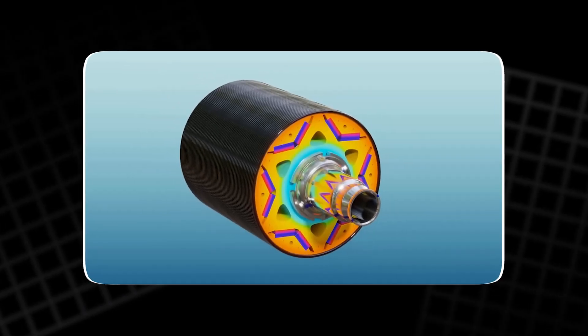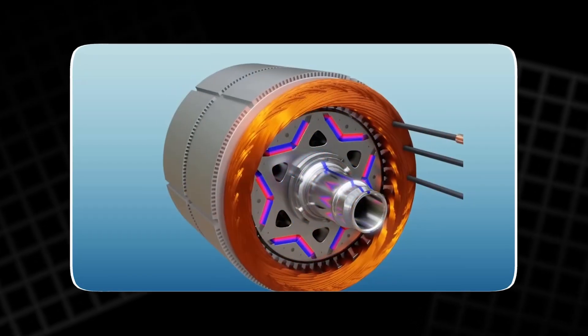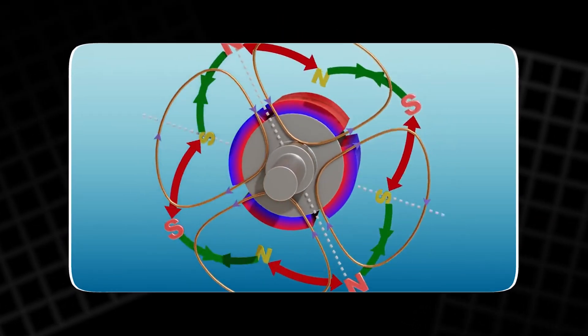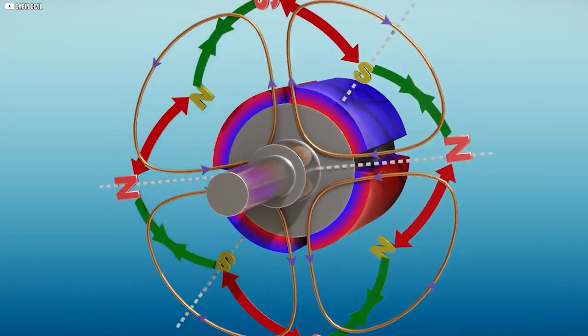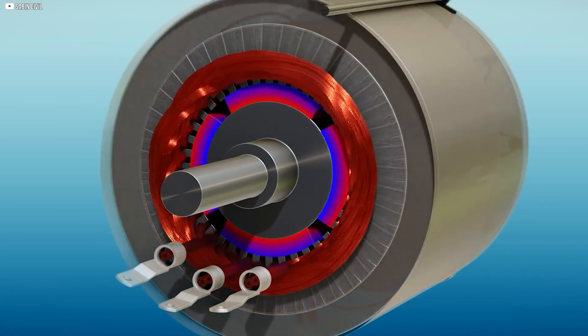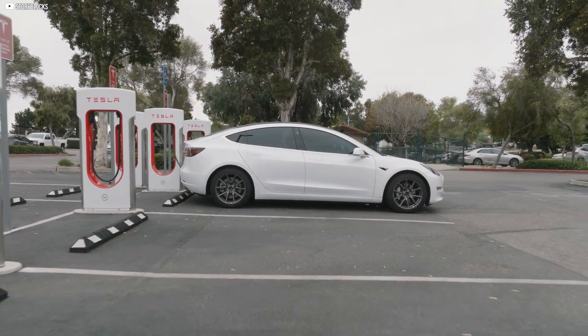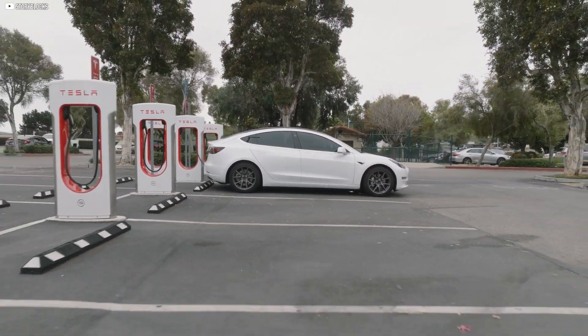Additionally, strong magnets can cause eddy currents in nearby materials, leading to heating and energy loss. While great for low speed performance, permanent magnet motors are less suited for highway cruising, where Tesla needed to improve efficiency for longer range.